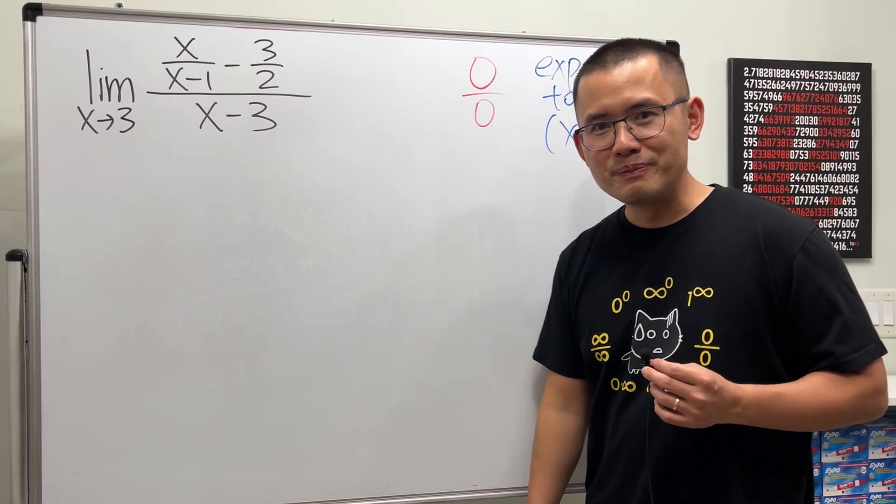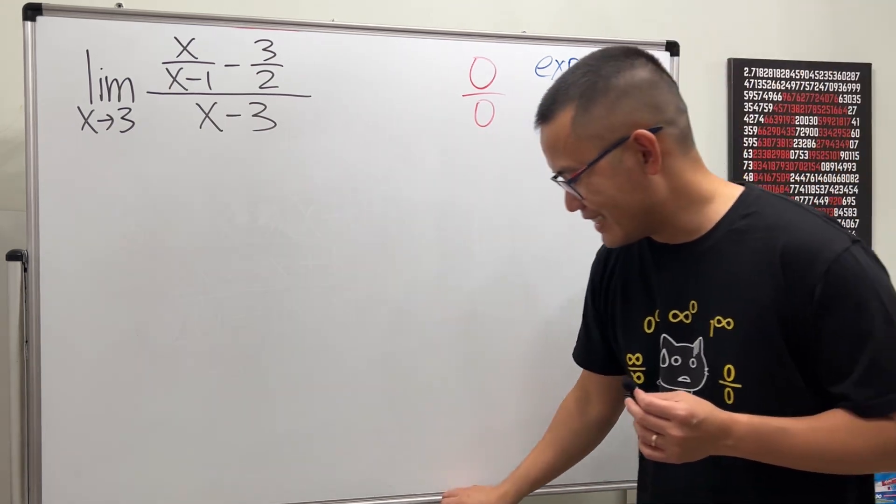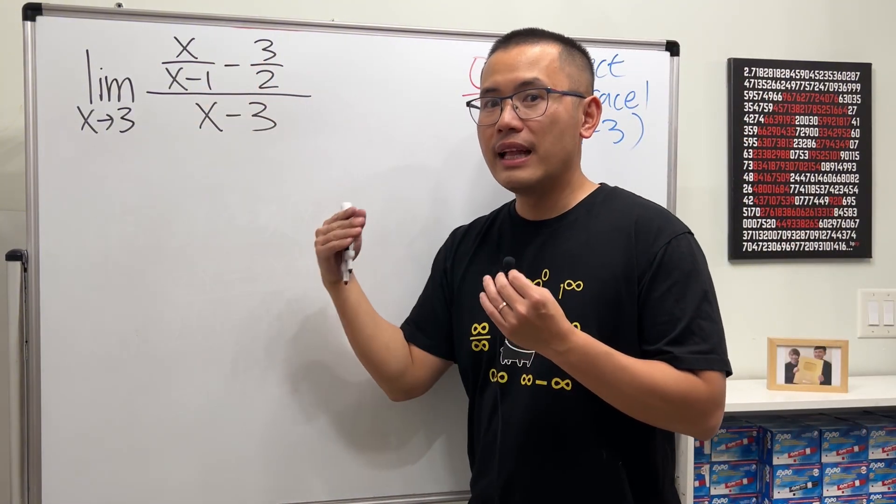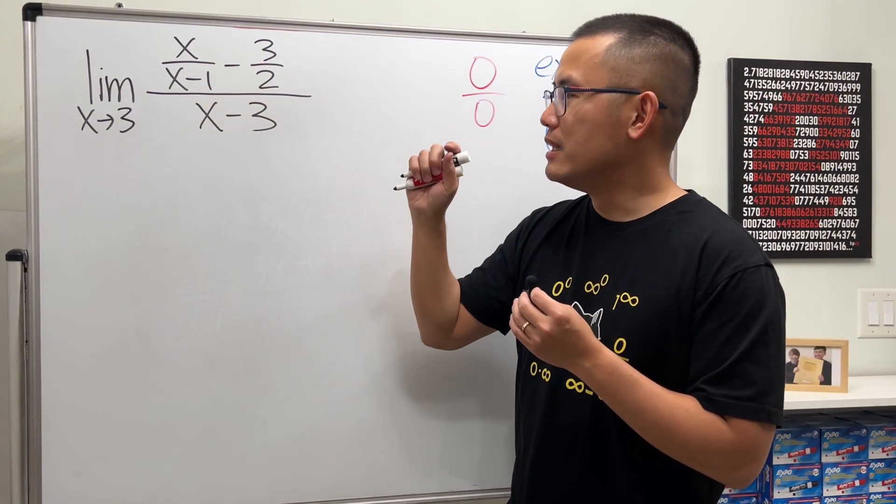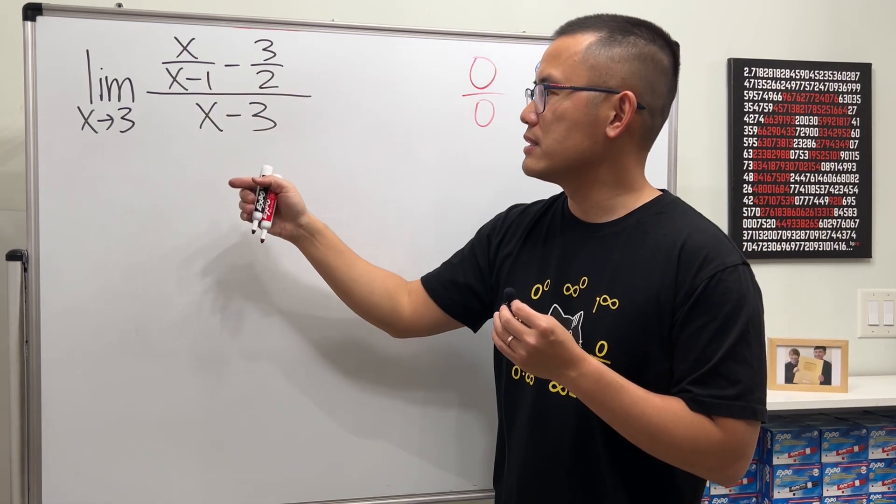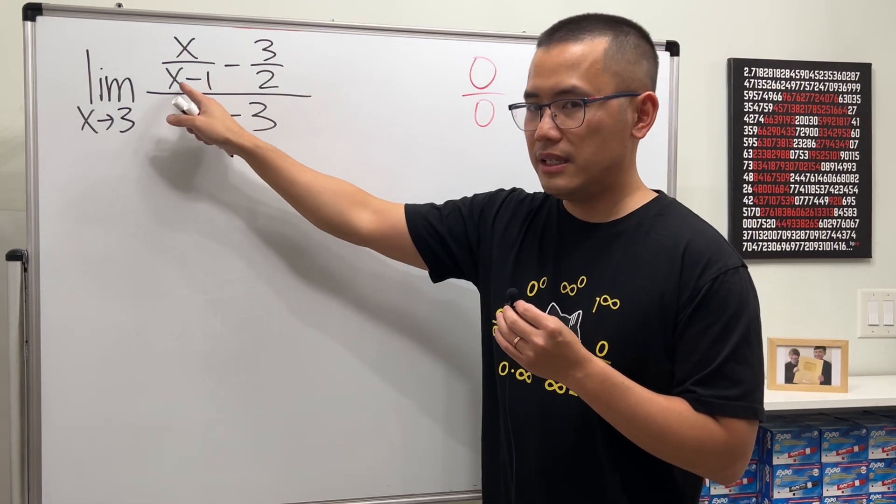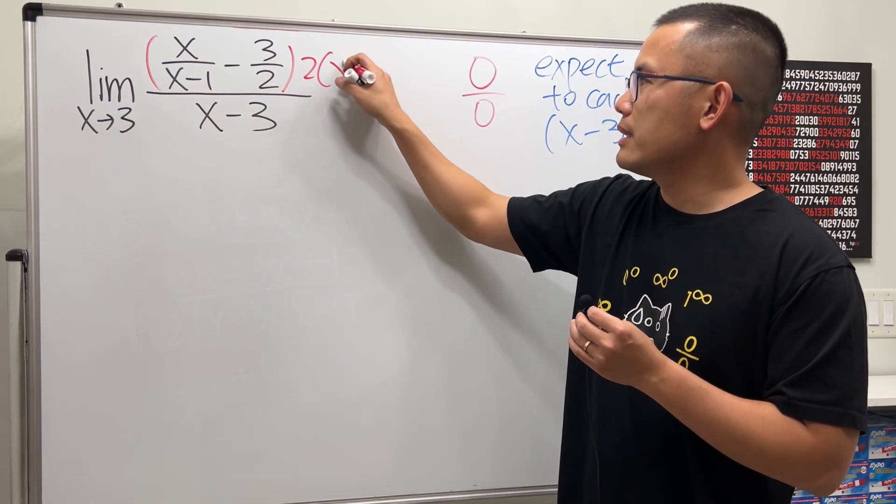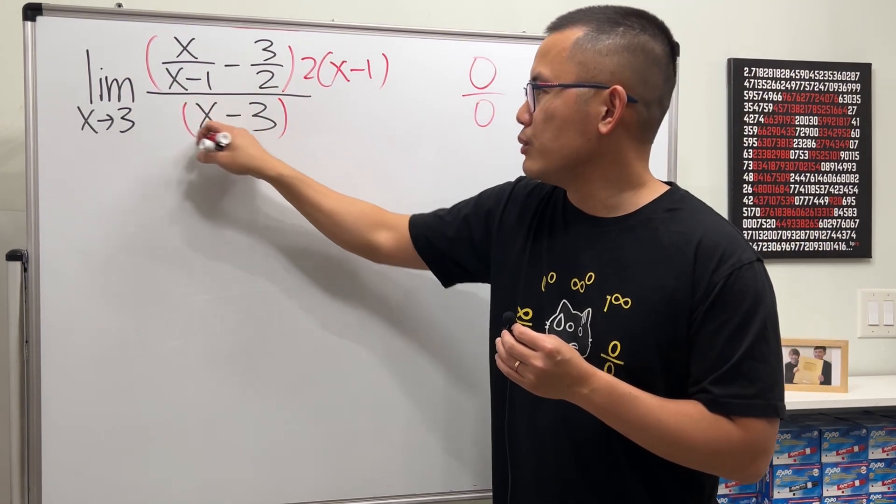Let's do it. Here to simplify this expression, let's multiply the top and bottom by the lowest common denominator of the small fractions. We need a 2 and the x minus 1, so multiply the top by 2 times x minus 1, and do the same thing on the bottom.